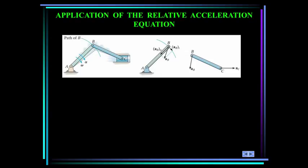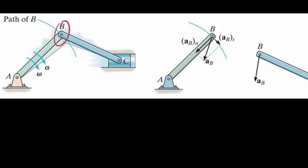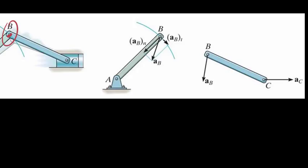In applying the relative acceleration equation, the two points A and B should generally be selected as points which have known motion, such as pin connections with other bodies. In this mechanism, point B is known to travel in a circular path about A, so the acceleration of B can be expressed in terms of its normal and tangential components. The normal acceleration of B will be omega squared R directed towards A, and the tangential acceleration of B will be alpha times the length of AB. Note that point B is common to both links AB and BC, so the acceleration of B is the same on both links. Point C connects link BC and the piston, moves along a straight line path, so the acceleration of C is directed horizontally.